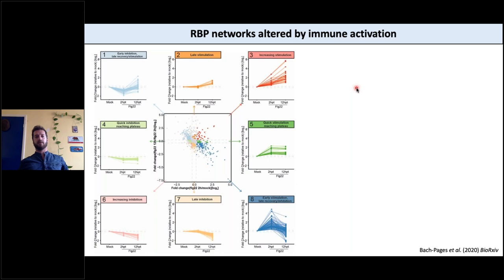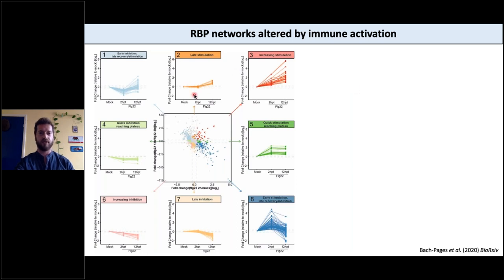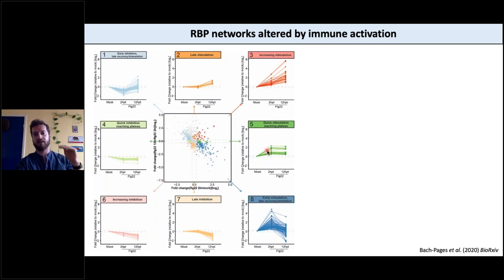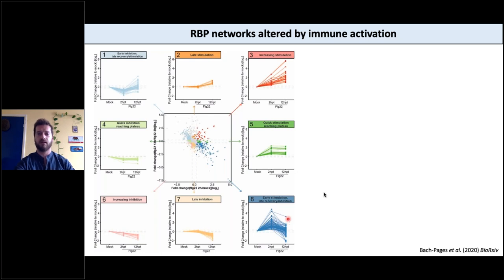Our current model is that at early time points, the RBPs are already there and then are somehow modified, possibly by PTMs, to be activated or repressed — to bind more or less RNA. Whereas at late time points, there is more time for genes to be transcribed, then translated, and then for these proteins to bind RNA. So abundance-driven changes start to be more predominant and PTMs are not such a driving force. Looking more into the dynamics, we see some common trends: some proteins are stimulated at late time points, some throughout the response, some stimulated early and then plateau, and some are more dynamic — going up then down. The same is true for the ones that are inhibited.